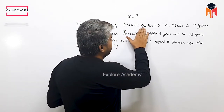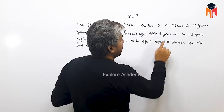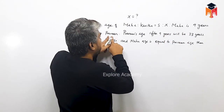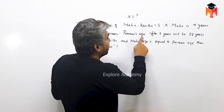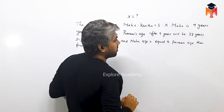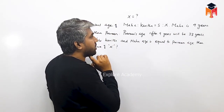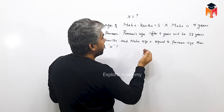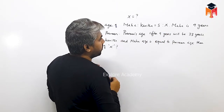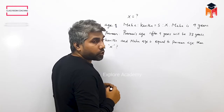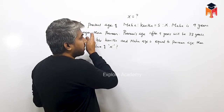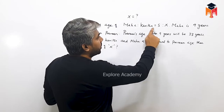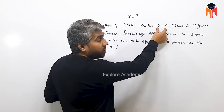Maga and Kavitha ratio. Maga's age is 9 years younger than Praveen's age. If you observe, Maga's age is 9 years younger than Praveen's age. Once we have the value of Praveen's age, we can find Maga's age.